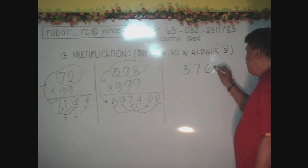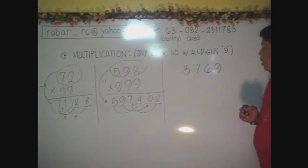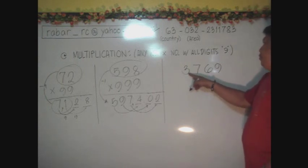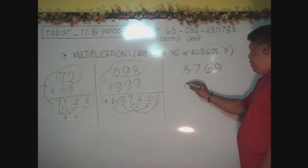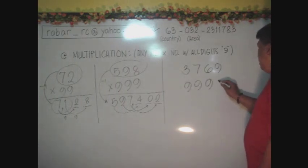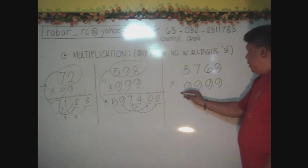3,769 or it means 4 digits here with number 3,769. And we have to multiply at least here 4 nines. If you multiply this with 4 nines, as we have learned there in the previous discussion.